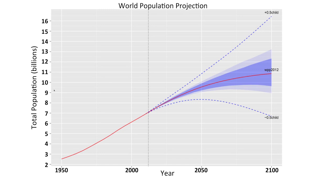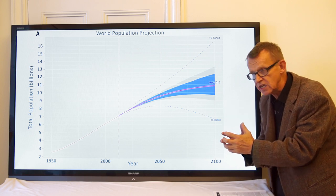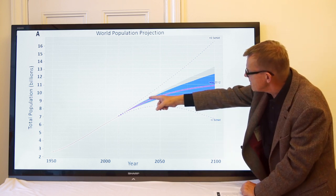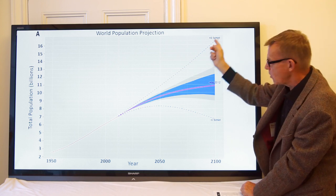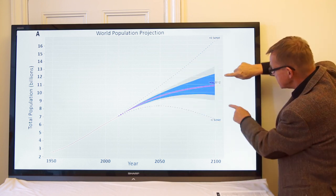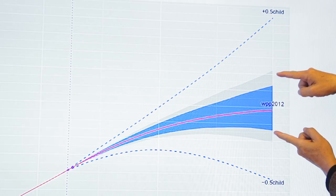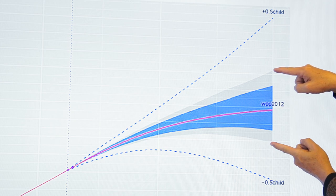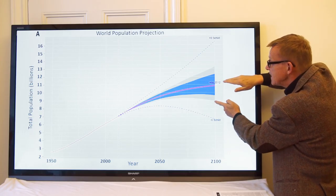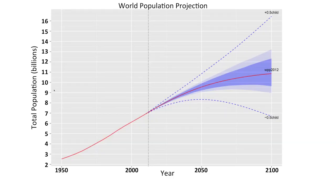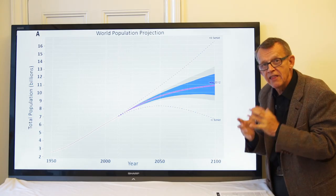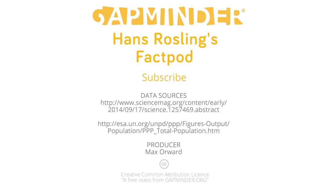The red line has been published before. The new thing with this study is that they have improved the estimate of the uncertainty. They used to just assume a line for half a child more per woman, half a child less per woman. Now they tell us, with 80% probability somewhere between these two lines, with 95% probability between these two lines, so somewhere between 9 billion and 13 billion, most probably 11 billion. And that's the world population we have to plan for.